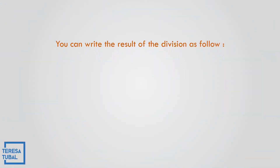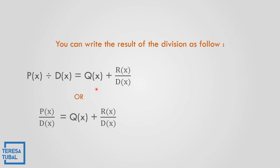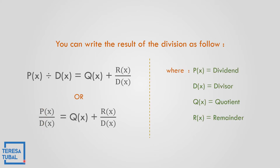You can write the result of the division as follows: Q(x) plus R(x) over D(x). The given can be written as P(x) divided by D(x) or P(x) over D(x), where P(x) is the dividend, D(x) is the divisor, Q(x) is the quotient, and R(x) is the remainder.